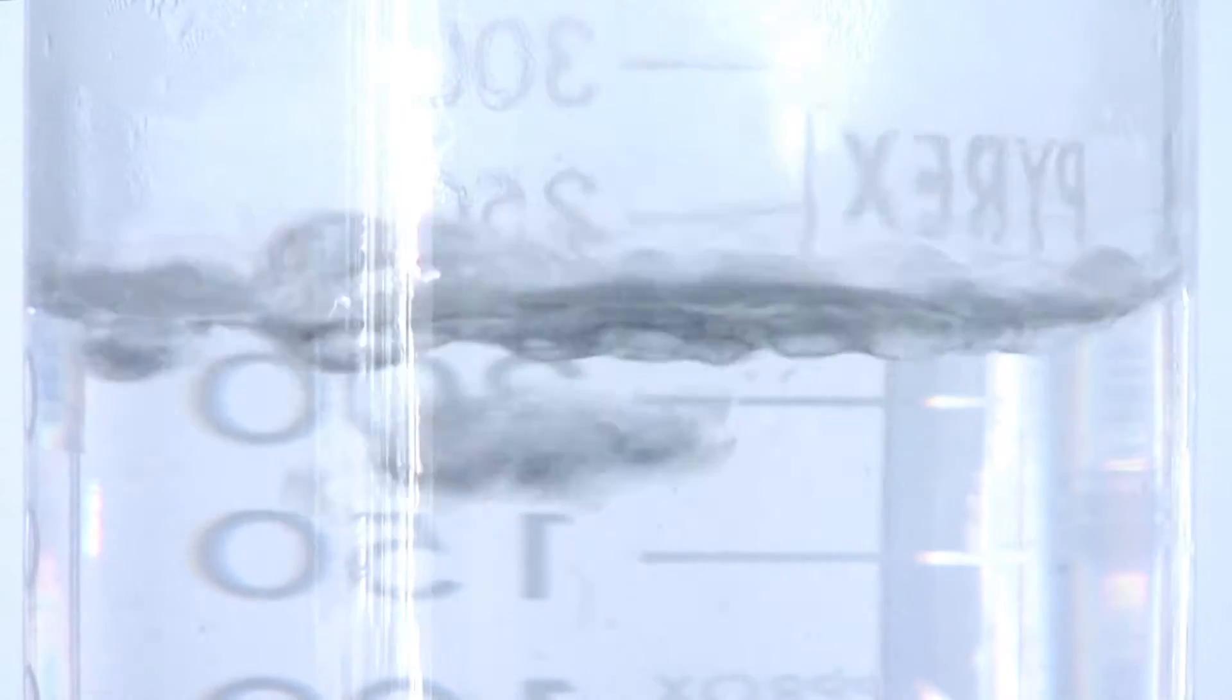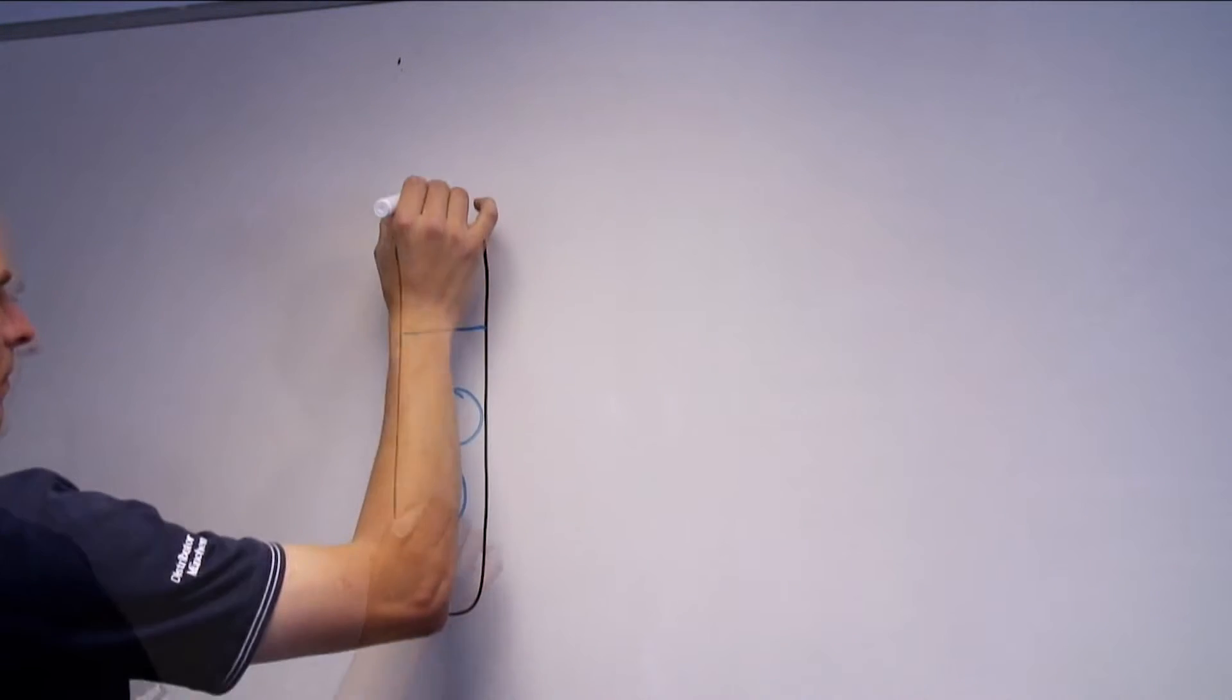The temperature of a boiling liquid cannot increase above its boiling point and is therefore very stable. With just a vacuum, bubbles would still develop in the sample, whatever the set temperature.